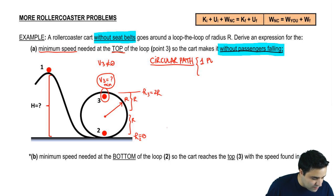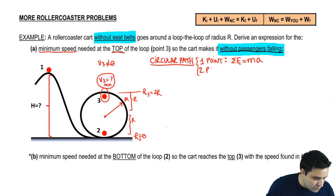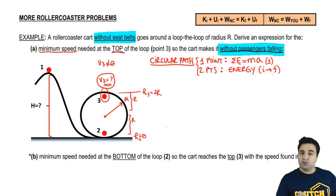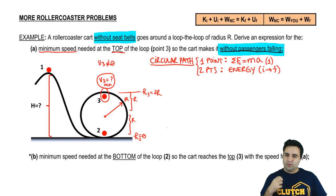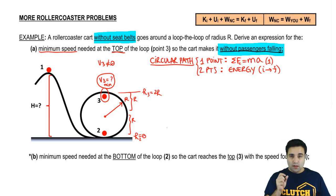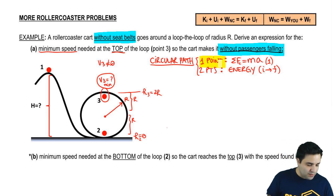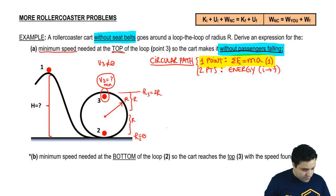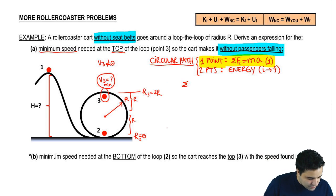F=ma always deals with a single point; the energy equation always deals with initial to final — therefore two points. In this question, I'm only asking how fast you need to be at the top so passengers don't fall — that references only one point. So we're going to solve this using F=ma.